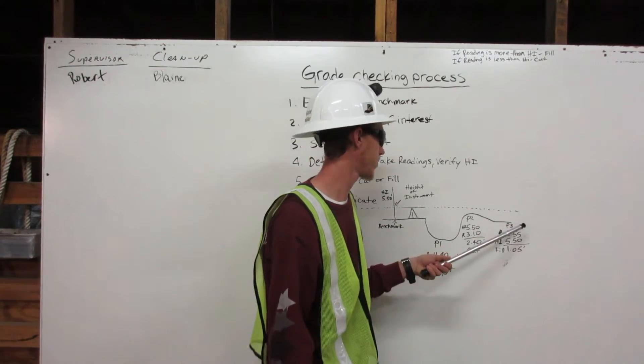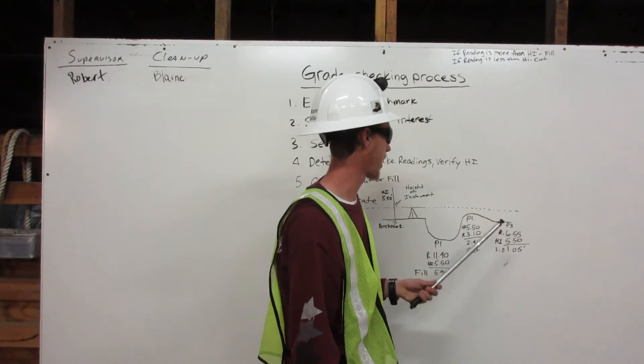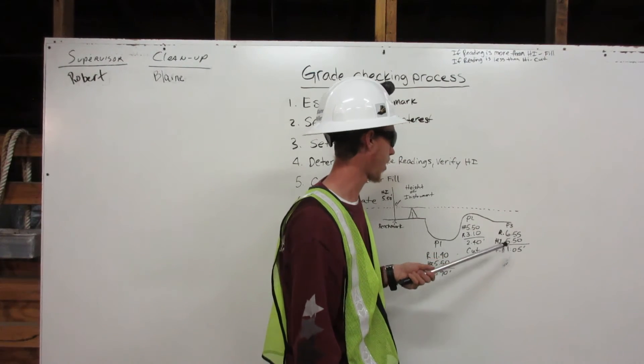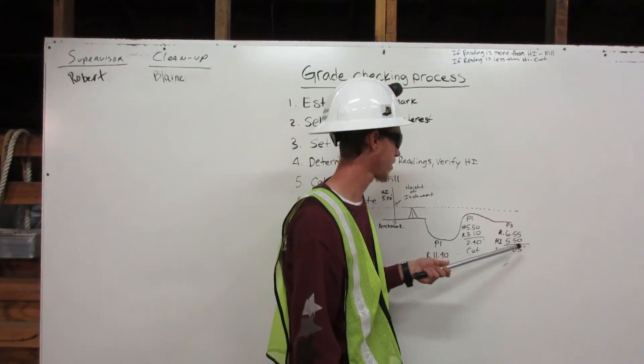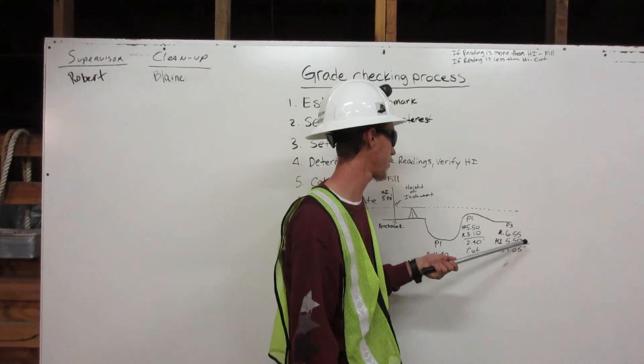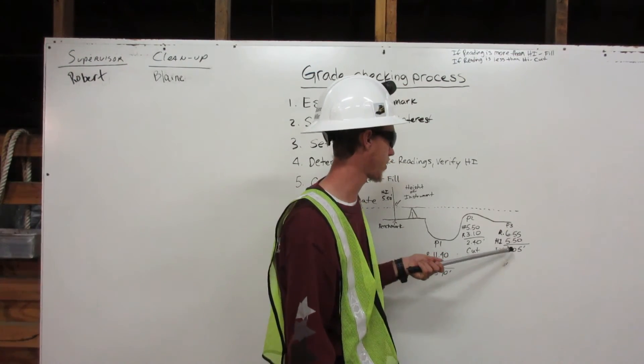And our third point, our reading is 6.55 feet. And our HI is 5.50 feet. We are going to subtract. And we are going to get 1.05 feet. And that is going to be filled.